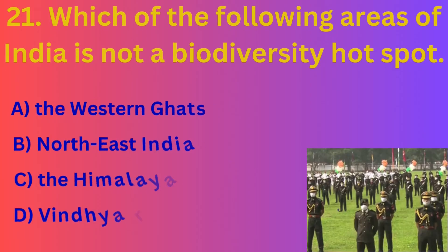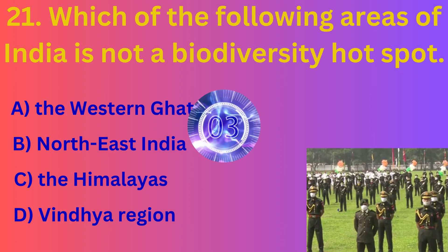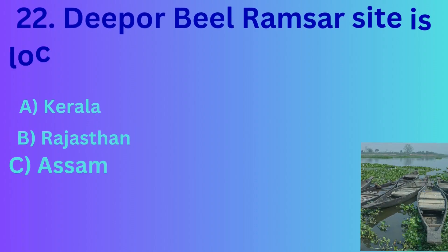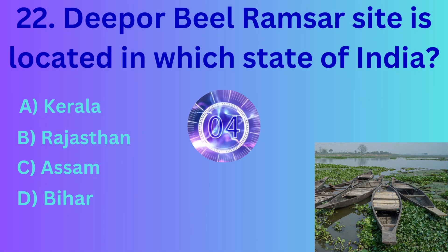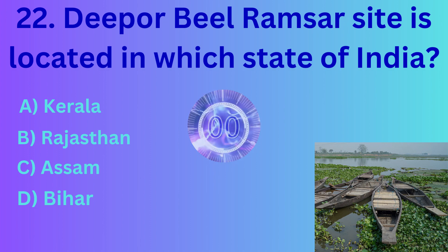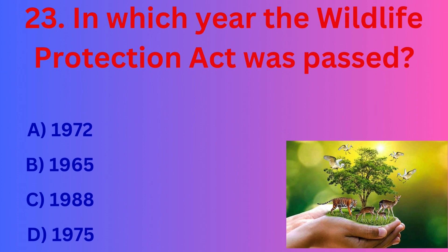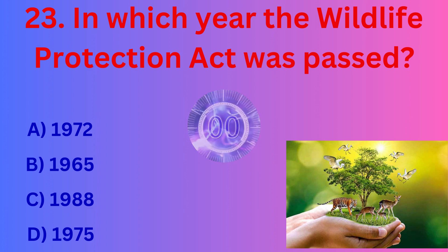Which of the following areas of India is not a biodiversity hotspot? The correct answer is option D: Vindhya region. Deepor Beel Ramsar site is located in which state of India? The correct answer is option C: Assam. In which year was the Wildlife Protection Act passed? The correct answer is option A.